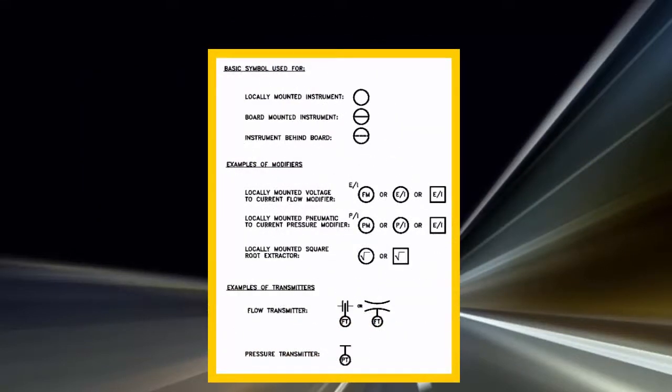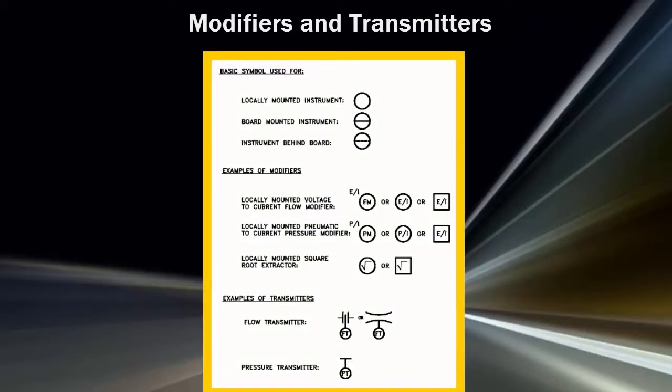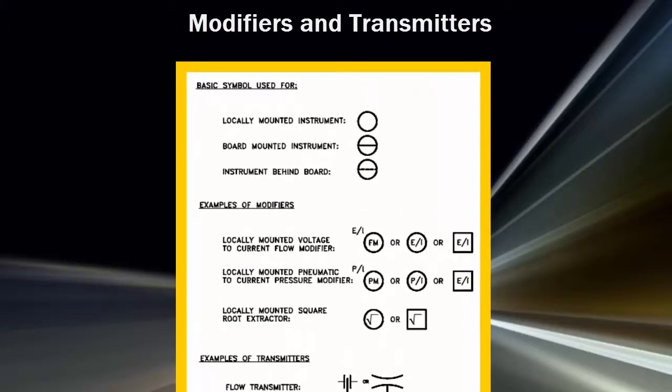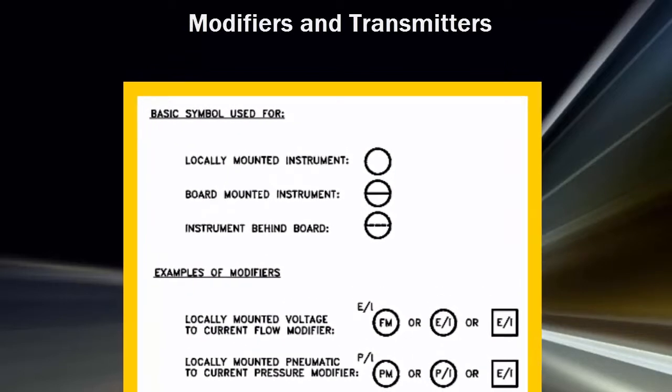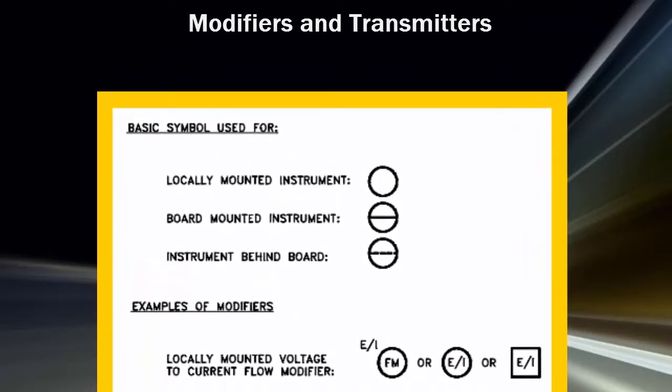Modifiers and transmitters. Sensors and detectors by themselves are not sufficient to create usable system indications. Each sensor or detector must be coupled with appropriate modifiers and/or transmitters.